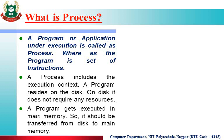A program gets executed in the main memory, so it should be transferred from disk to main memory. When a program executes, first the program resides on the hard disk. But when it comes to the execution phase, it comes to main memory, which we call RAM. When the program starts its execution, it resides on main memory in the form of a process.